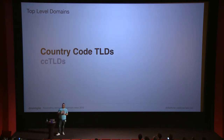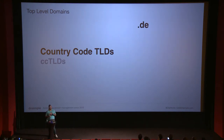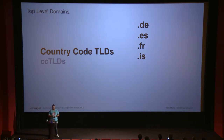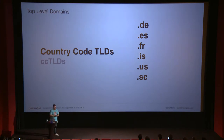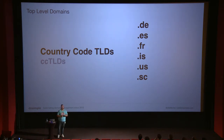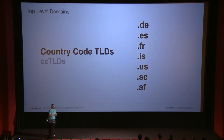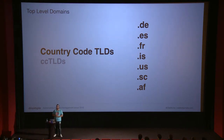There are different variants of TLDs. There are country code TLDs that belong to a specific state or country — like DE for Germany, ES for Spain, FR for France, IS for Iceland, and US for the United States, because .com is not a country code TLD. There's also SC for the Seychelles — you can't register it with an API; you need to walk into an office and sign a form on the Seychelles.